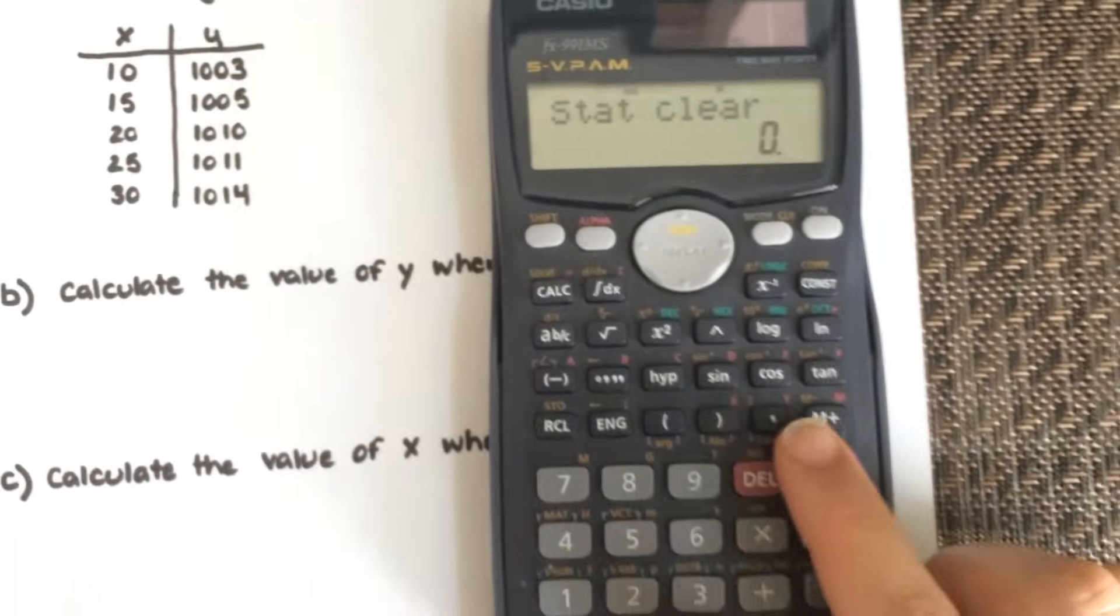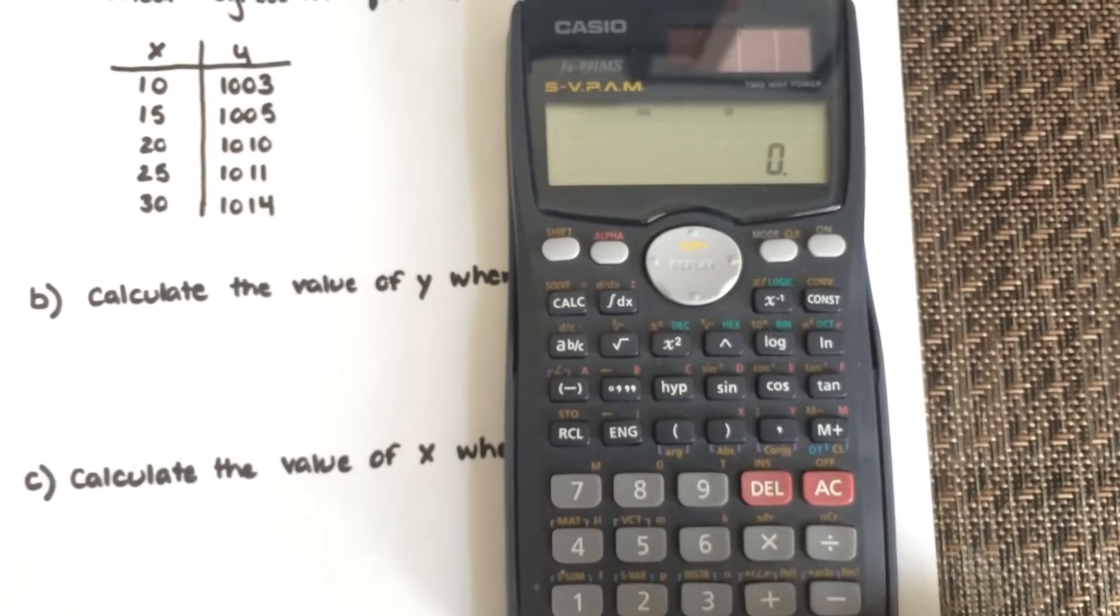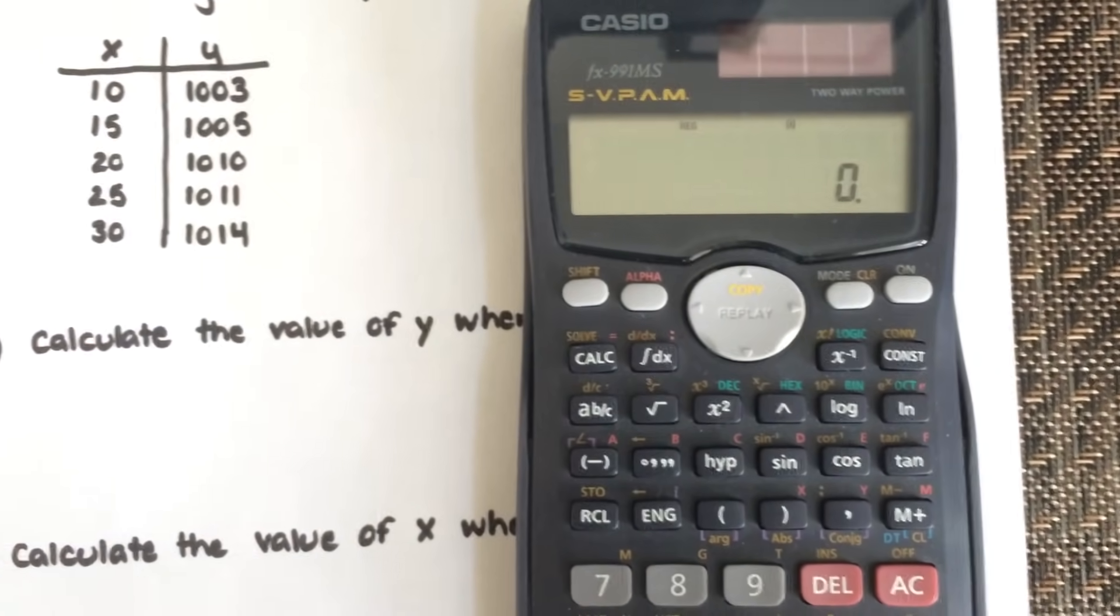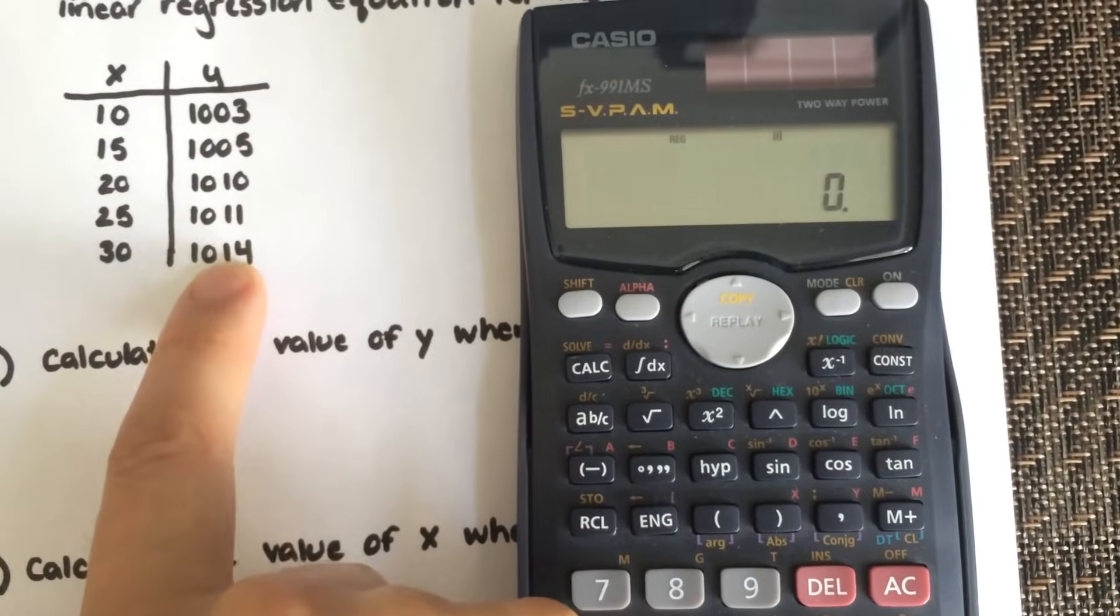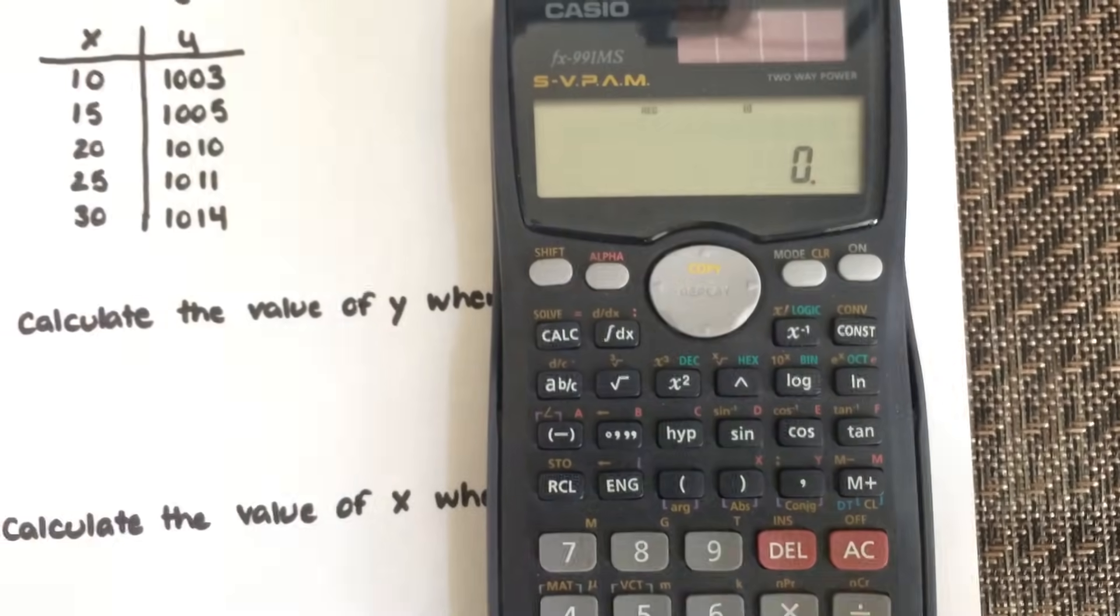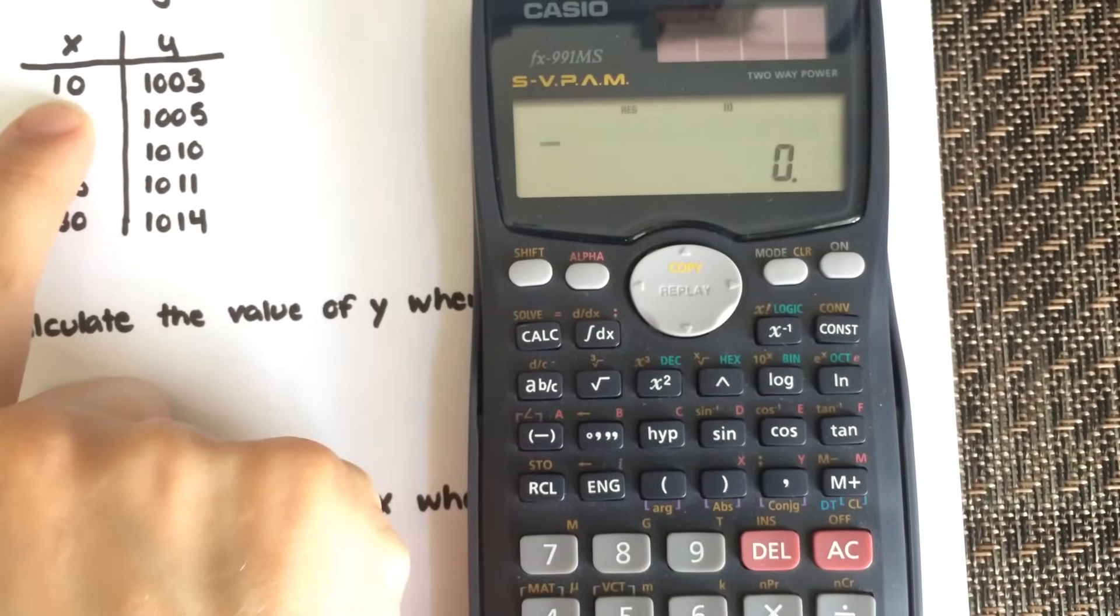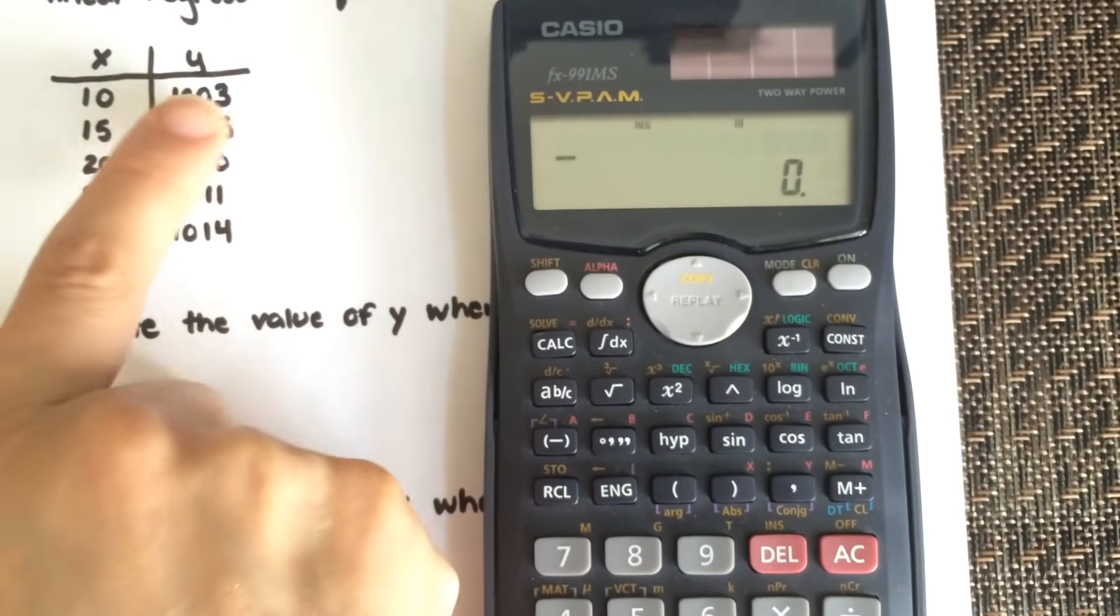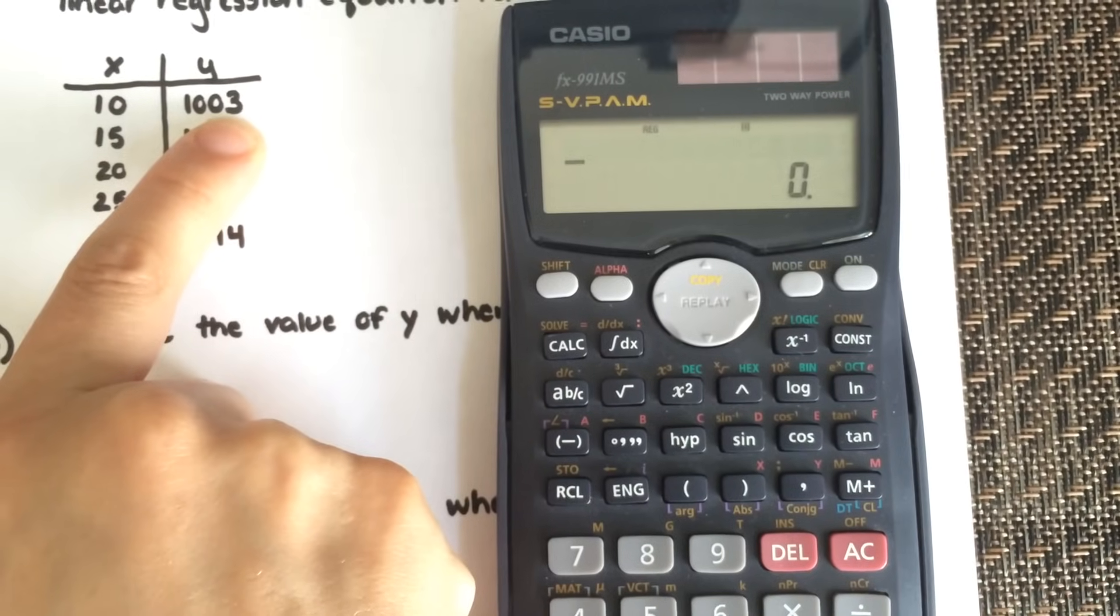Now that we have that done, clear your screen. We're going to enter in all our data points. We have 5 data points, we're going to enter that in. The first set of data, the x and the y value that go together is 10 and 1003.